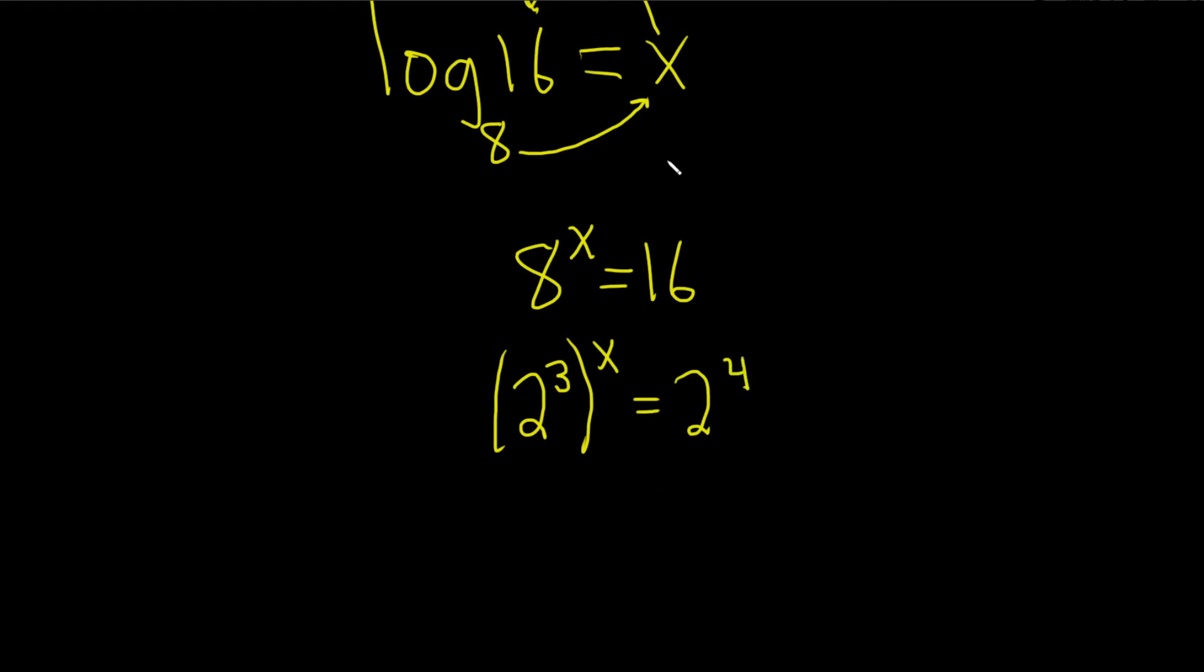Now we can use properties of exponents. So we can basically multiply these numbers. This will be 2 to the 3x equals 2 to the 4.